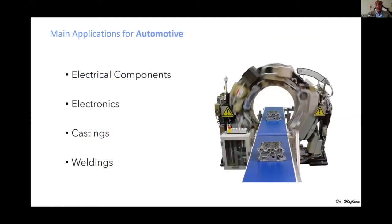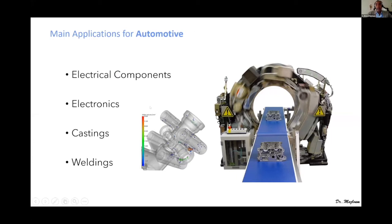In automotive, we can inspect different types of parts — electrical components, electronics, casting products, welding products — using different types of CT machines. We can get very nice 3D dimensional screens that show exactly where defects are, with different colors showing depth, giving 3D measurement and viewing to allow the inspector to easily clarify and detect whether parts are in good condition or should be disqualified.